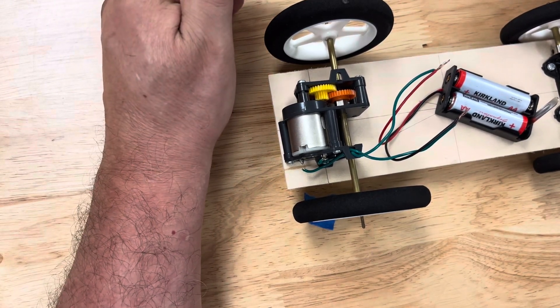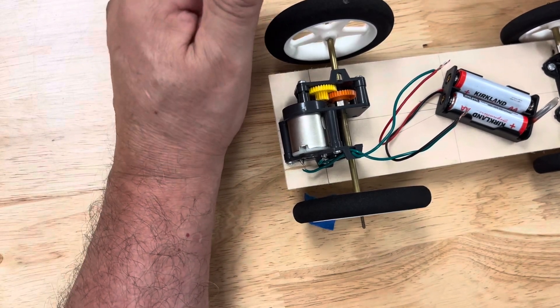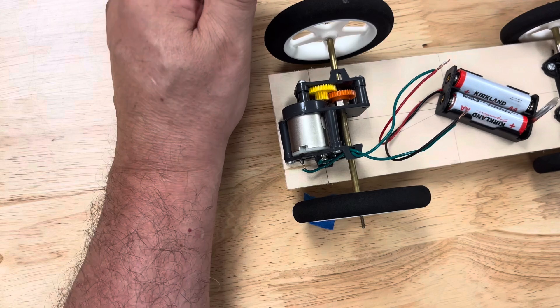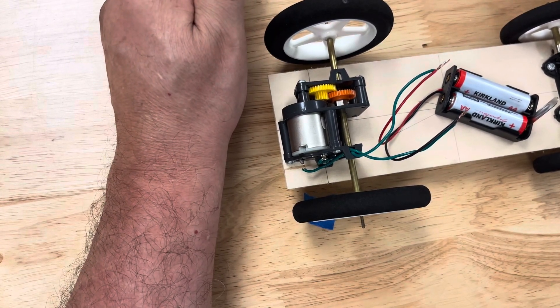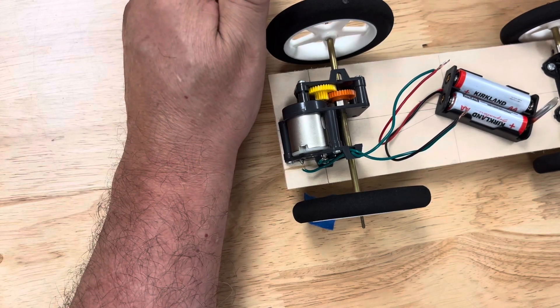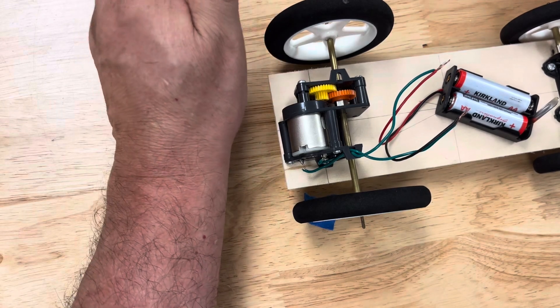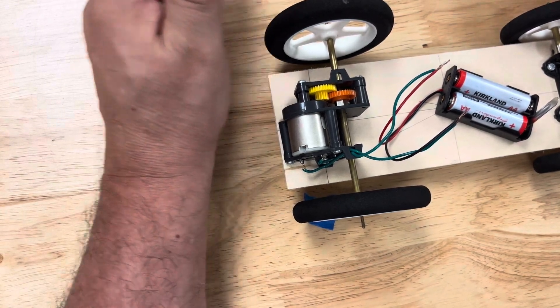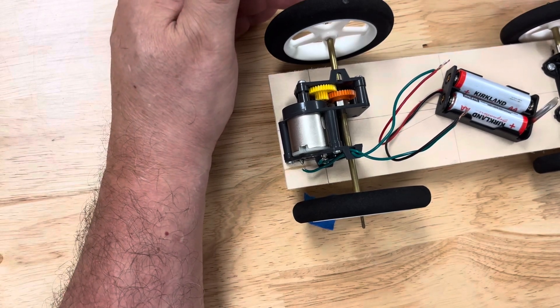This is why it is so important when you first get to the track and you're setting up, you always, always, always want to double check which direction the wheel is turning once you install either the solar panel or the batteries. And once you have that set and you know that's making the wheels go forward, don't touch it. Leave it alone. And that way you know every time you go down, those wires are connected up properly.